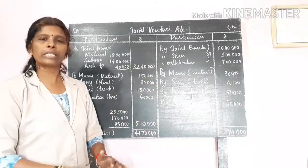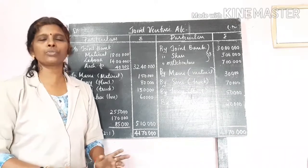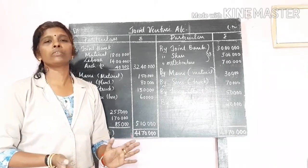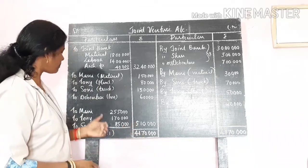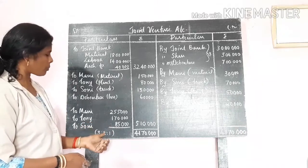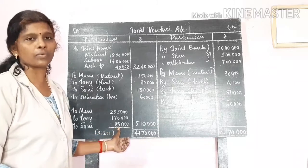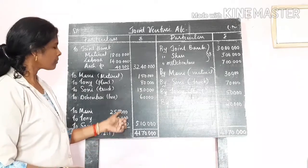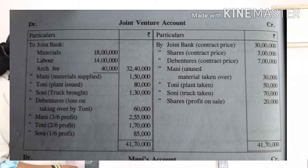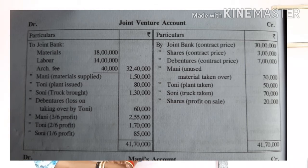So we divide the individual profit of Rs. 5,10,000 in the ratio 3:2:1. In that proportion, Money's share of profit is Rs. 2,55,000; Tony's share of profit is Rs. 1,70,000; and Sony's share of profit is Rs. 85,000. So Money, Tony and Sony each get their profit. Okay, we now open the personal accounts — that is, Money's, Tony's and Sony's personal accounts.